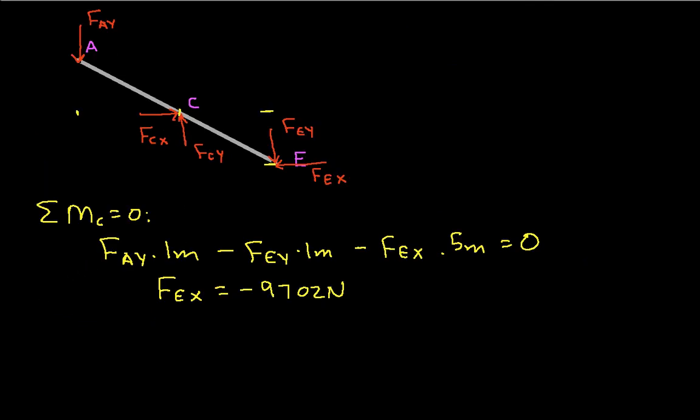We need to do the summation of the forces in the X direction. So the sum of forces in the X direction is zero, tells us that FCX minus FEX is equal to zero. We can rewrite this as FCX is equal to FEX. So we have FCX is equal to minus 9,702 newtons.